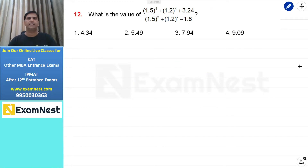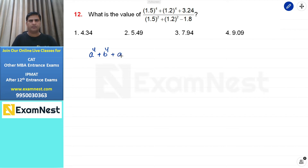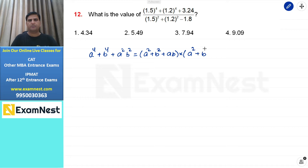यह question algebraic expression पर based, एक easy level का question है। एक बड़ी important identity है वो हमें मालूम होनी चाहिए: a raised to the power 4 plus b raised to the power 4 plus a squared b squared is equal to a squared plus b squared plus ab multiplied by a squared plus b squared minus ab.